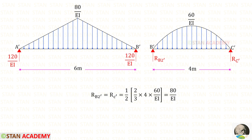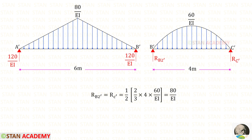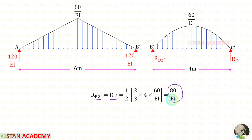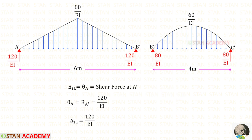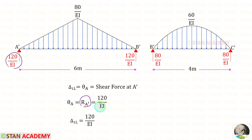Now let us take beam B dash C dash. This is also a symmetrical diagram, so RB2 dash and RC dash can be found by dividing the area by 2. The area formula of a second degree parabola is 2 upon 3 times base times height. Here breadth is 4 and height is 60 upon EI, giving RB2 dash and RC dash as 80 upon EI. Delta 1L, the slope at point A (theta A), equals the shear force at A dash in the conjugate beam, which is RA dash. So delta 1L equals 120 upon EI.